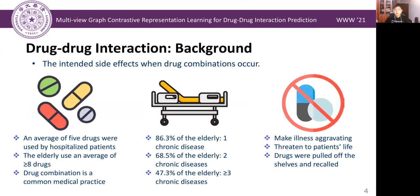Drug combination is a common medical practice. An average of five drugs is used by hospitalized patients. In the elderly, the number increases to even more than eight. Meanwhile, around 68% of the elderly have at least two kinds of chronic diseases. So it's clear that drug combinations are inevitable.